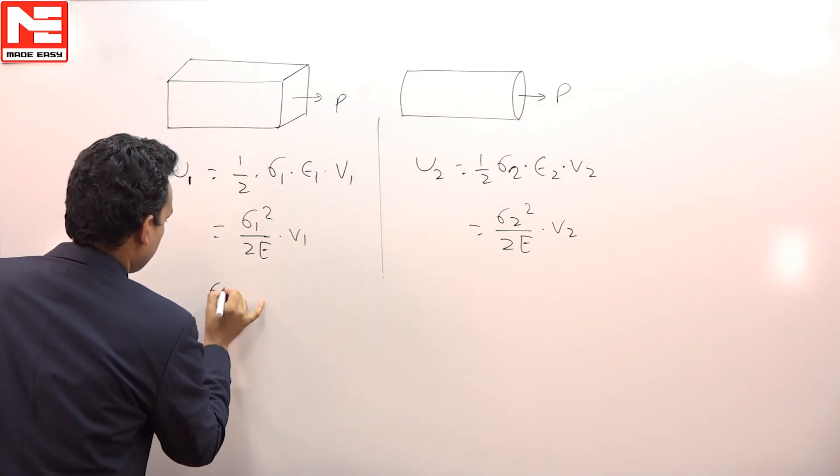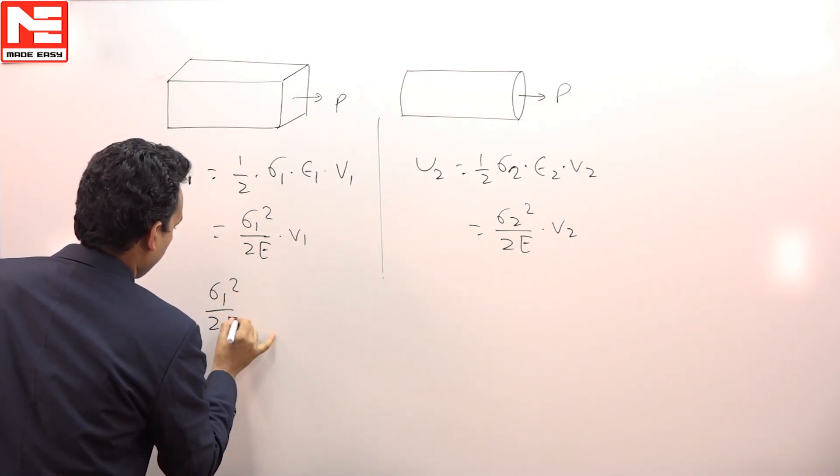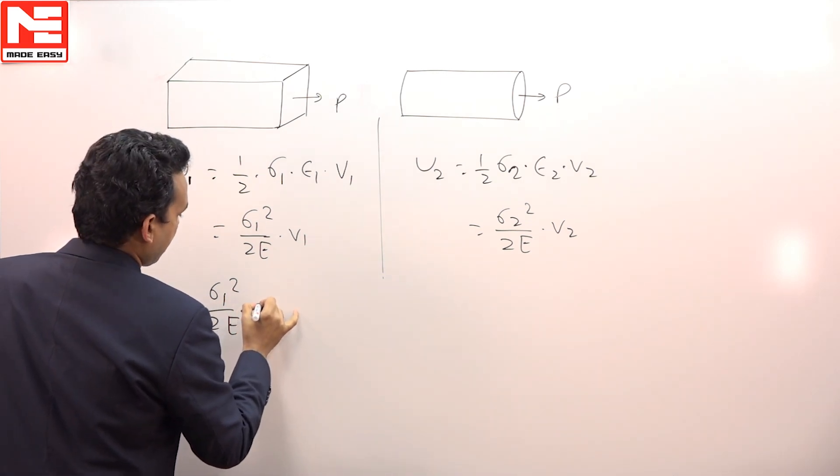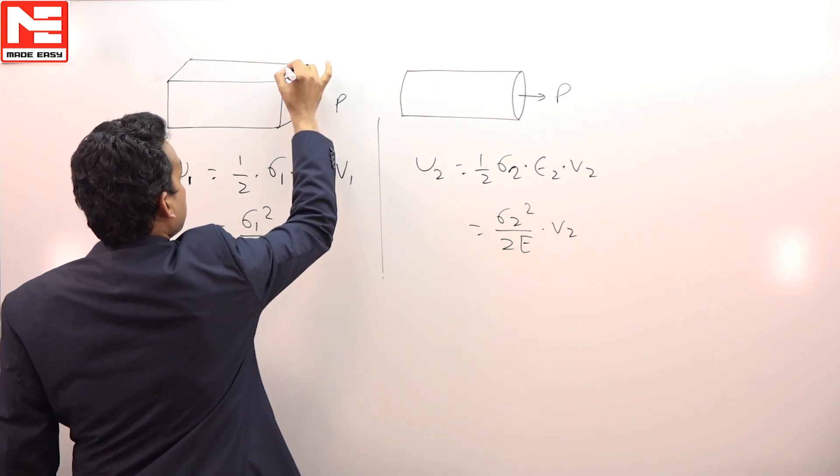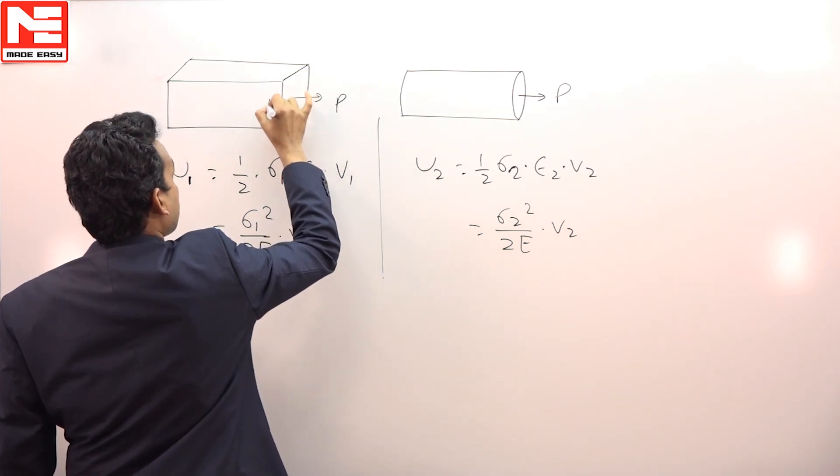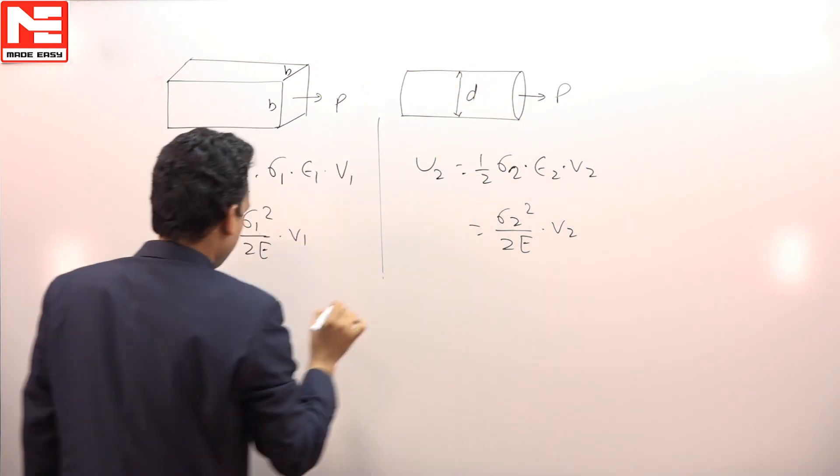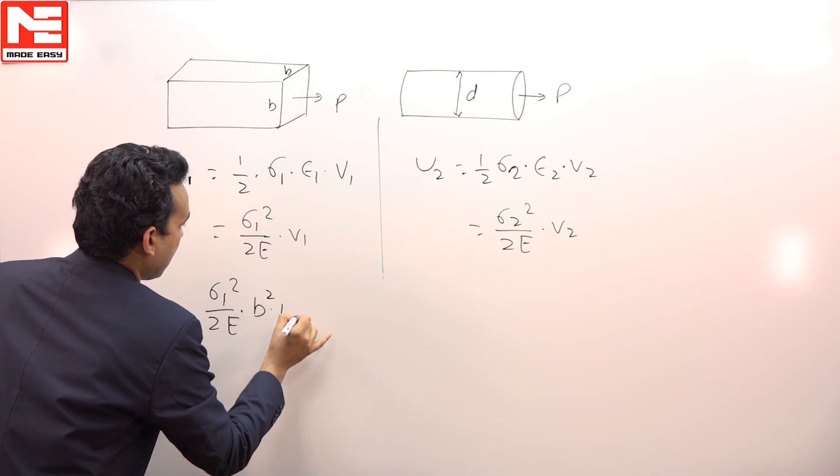It means this should be equal to σ₁²/(2E), then into this V₁ will be equal to—suppose the depth and width is the same, that is b—and the diameter is d, means you have to write b² × l.